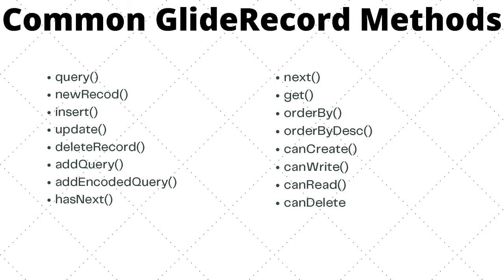Then we have the next method, which returns a boolean value indicating whether there is another record in the GlideRecord to loop through, and which performs the actual iteration. Next is the get method, which is a shortcut for grabbing a specific record. Then we have orderBy, which accepts a field as its argument and orders the list of records in ascending order based on that field. We also have the orderByDescending method.